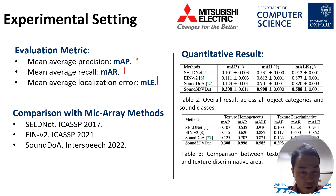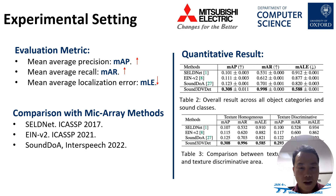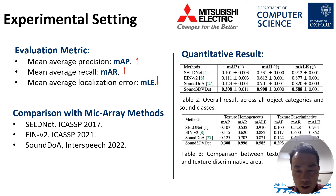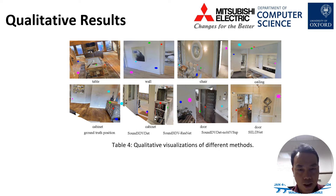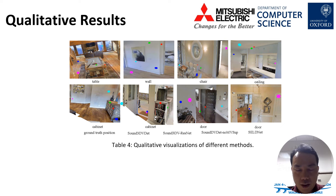For the evaluation metrics, we adopted three metrics: mean average precision, mean average recall, and mean average localization error. We compare our proposed method Sound 3D with That against baselines in Tables 2 and 3. Our proposed method generates much higher scores in terms of all evaluation metrics. We further present qualitative result visualizations showing that our method can predict the sound source closest to the ground truth, while the other three comparing methods give less accurate predictions.